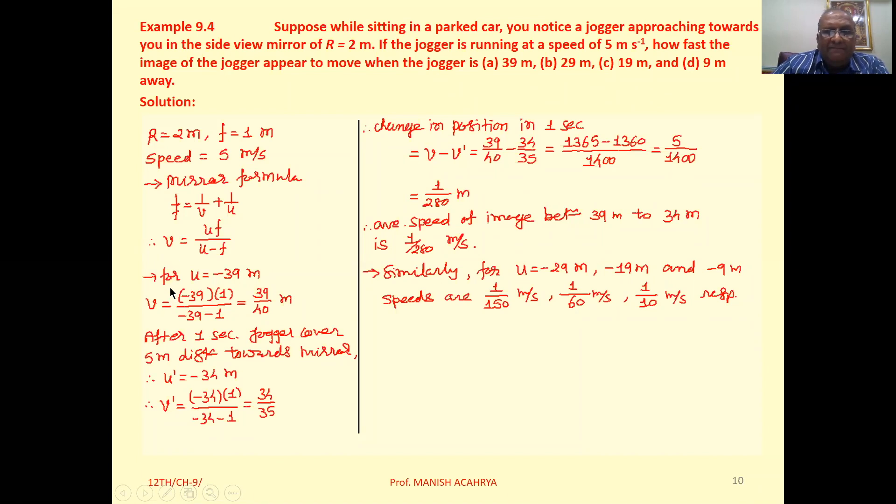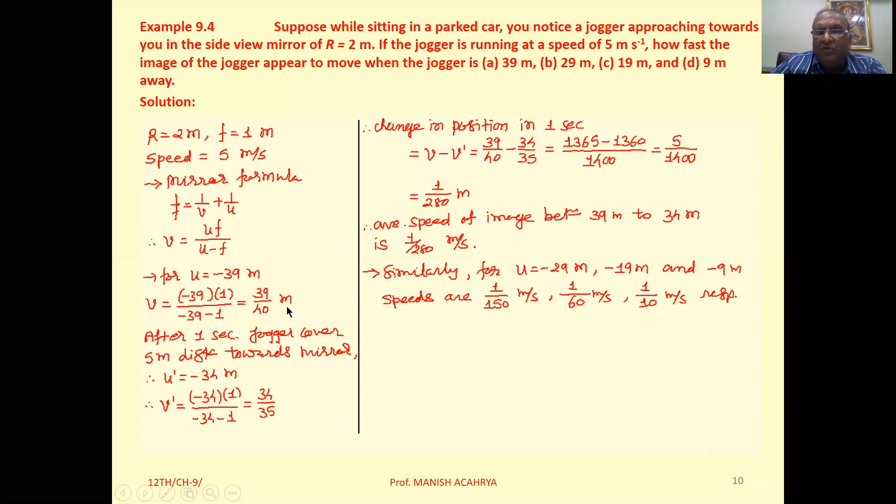Now the object position is minus 39 meter. The image position is uf upon u minus f, which is minus 39 into 1 upon minus 39 minus 1. So v equal to 39 by 40 meter.